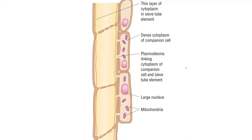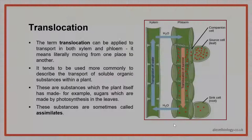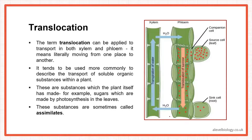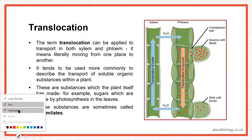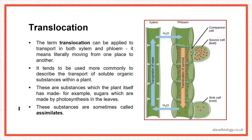You can compare phloem sieve tube elements and companion cells to see how they're connected. When we talk about translocation, please remember it simply means moving something from one place to another. It is not just associated with phloem — transportation can involve both xylem and phloem. But commonly, translocation tends to be described for phloem specifically.